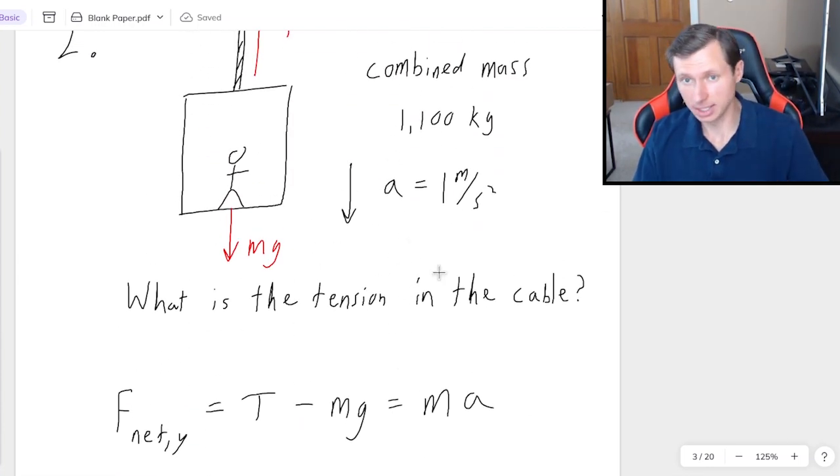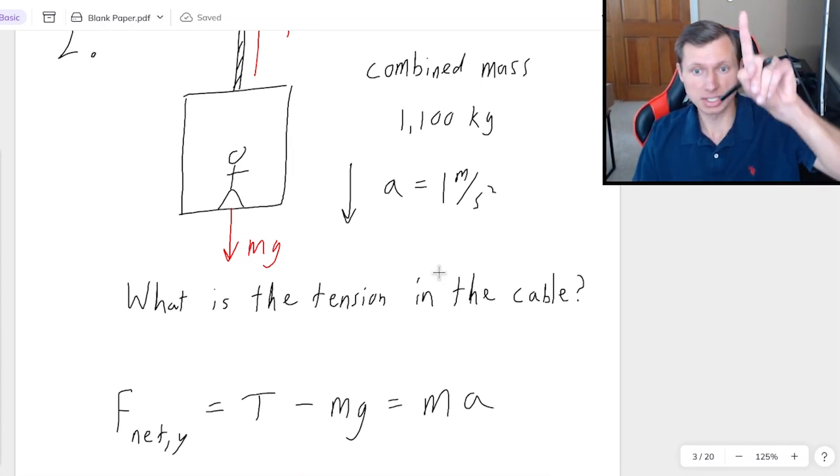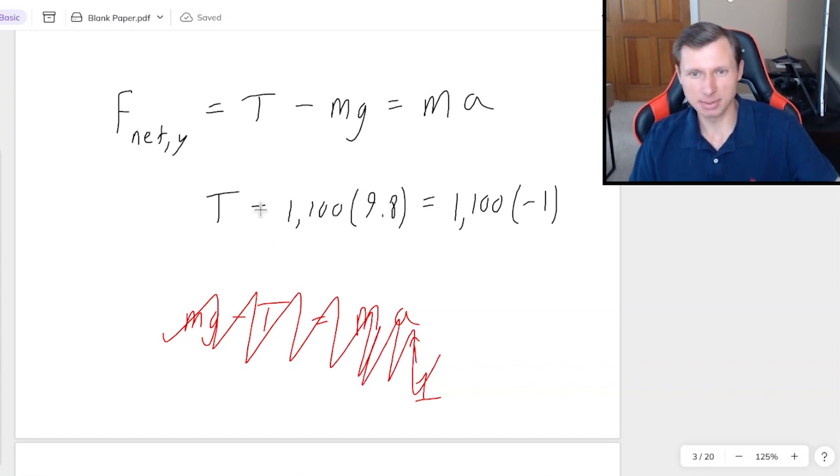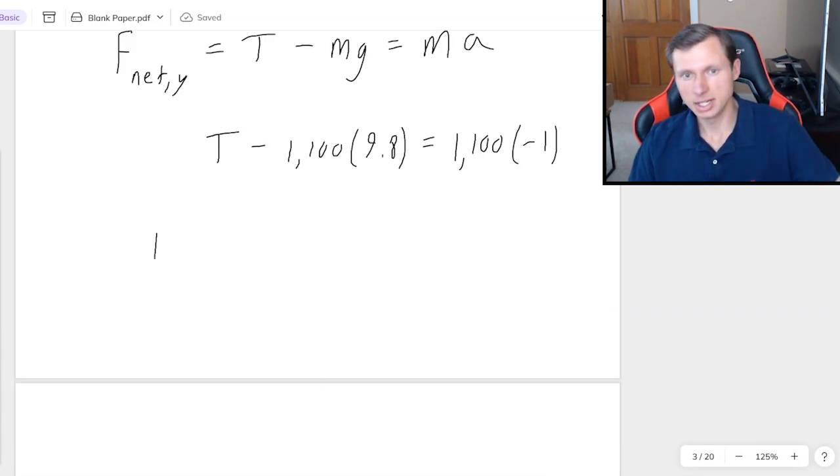Now, by the way, technically, if you really want to, you can define downward as positive and upward as negative. What that will change is that now it would be Mg minus T equals Ma. And now this would be positive 1. And you'll notice we swapped the order of Mg and T. Now, I'm not doing it this way because I've already got it set up this way. But you could do it with downward as positive if you really want to. Be very careful with that because it's very easy to make a mistake.